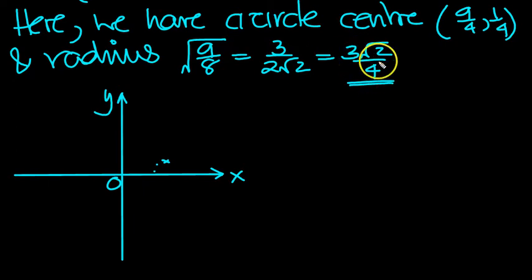And then the radius is 3 quarters root 2. So the circle will lie inside here but it will come under the bottom.